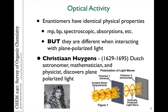In the previous video, we talked about symmetry and asymmetric carbons and the fact that molecules can exist as mirror image isomers that are not superimposable. This is what we refer to as enantiomers. I want to mention a little bit of the history and properties of these types of stereoisomers.